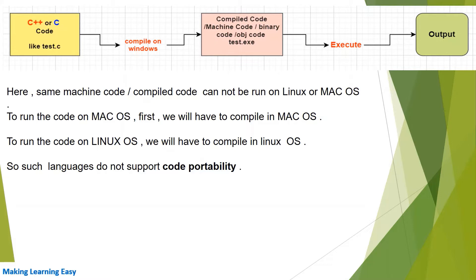Let's understand platform dependency with an example. At the top there is a screenshot showing your source code in C or C++, the file name is test.c. You have compiled this code on the Windows operating system. After compilation you get the compiled code, also called machine code, binary code, object code, or test.exe executable file. You then execute this code on the same Windows machine and get the output.